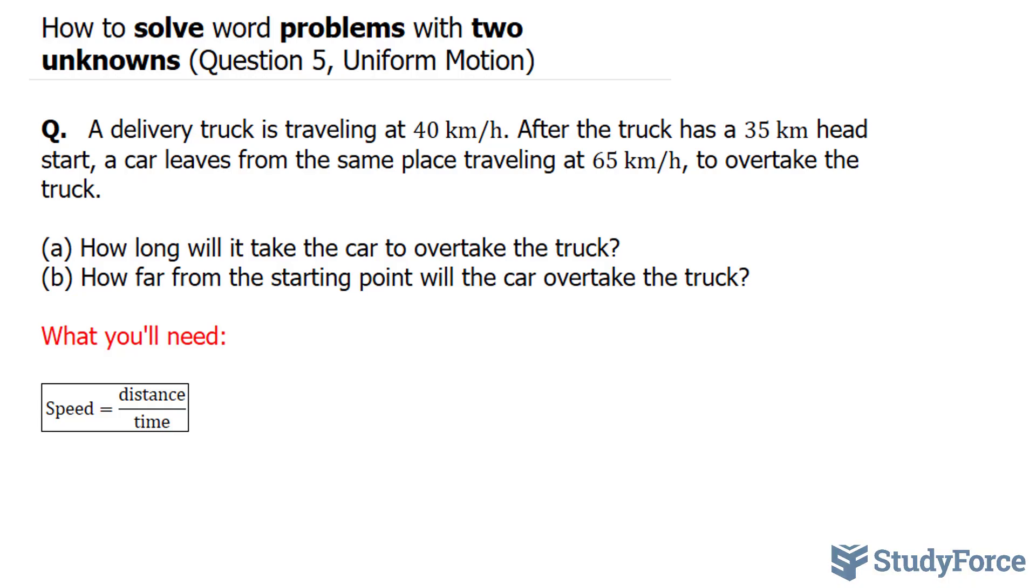I want you to start this question by visualizing what's happening. We have a truck that has left a starting point, a common starting point with the car, and it is traveling 40 kilometers an hour. So this is the pathway of the truck, and it will meet the car at some point D, and the truck has already traveled 35 kilometers. So if this is zero, we'll say that from here to here is 35 kilometers. So the truck is currently right here.